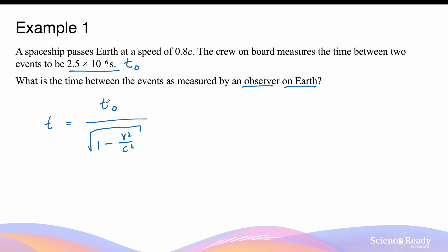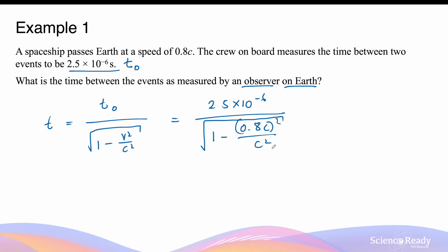We're trying to find t in this equation. So this is equal to 2.5 times 10 to the minus 6 in the numerator, divided by the square root of 1 minus 0.8c squared divided by c squared. To make our calculation simpler, we can keep the velocity in terms of c because the c squared in the numerator will cancel out with the c squared in the denominator.